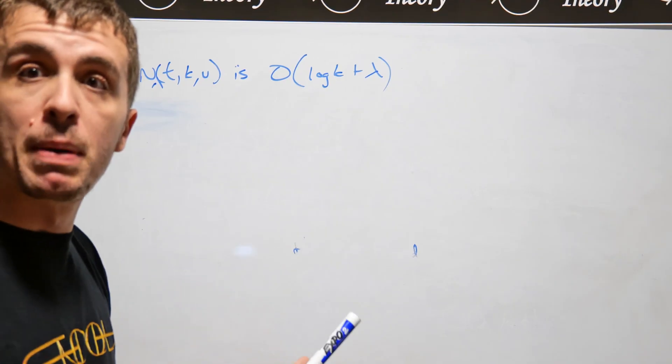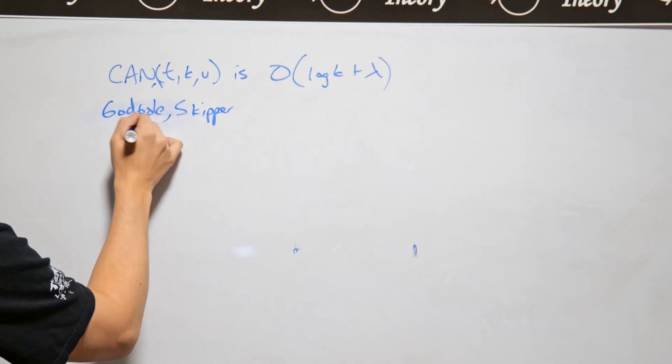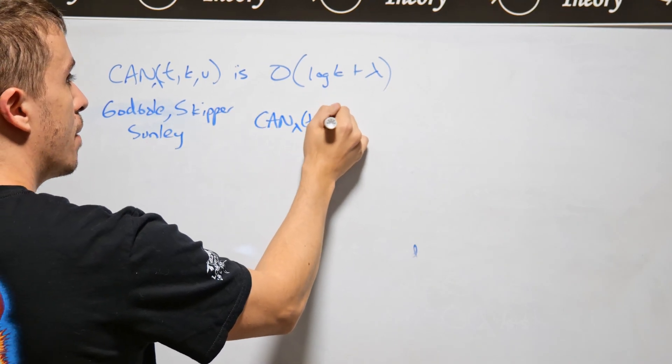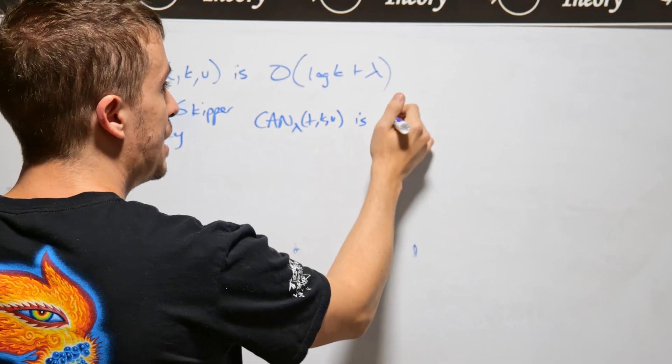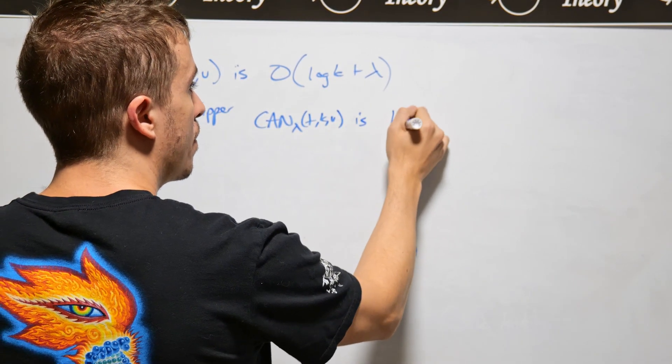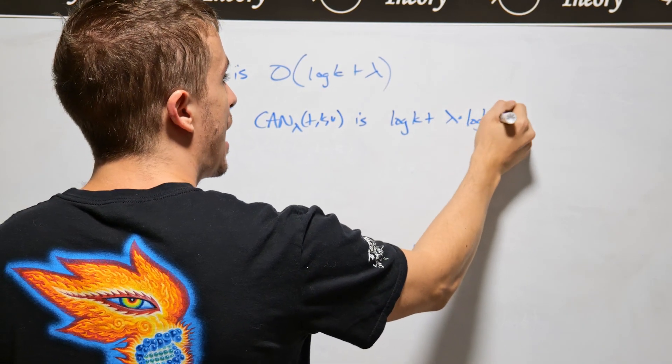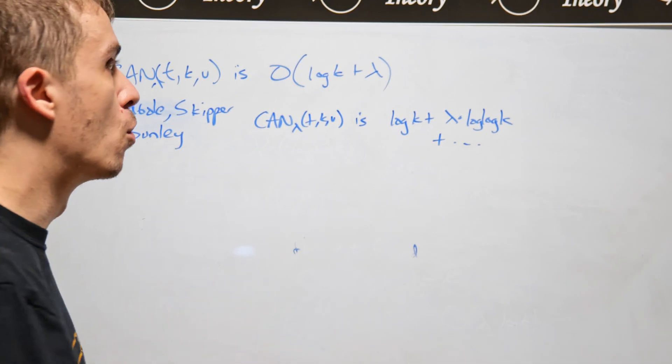So the next best bound that was proven was by Godbole, Skipper, and Sunley. And what they were able to show was that CAN lambda t k v, and there are some things I'm going to suppress to make things easy, is log k plus lambda times log log k plus some smaller things that are not so important.